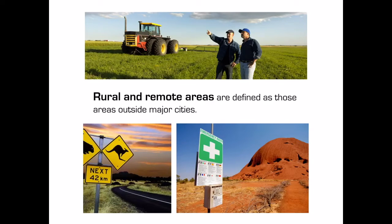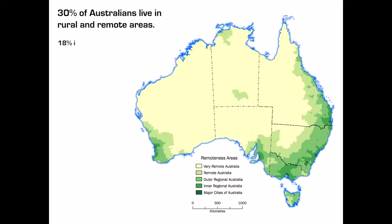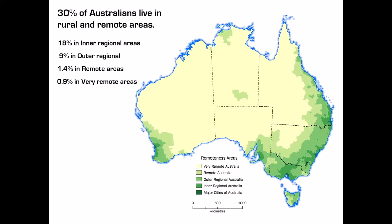Rural and remote areas are defined as those areas outside major cities. You can clearly see on this map that there is quite a large proportion of the population living in rural and remote areas. In fact, the majority of Australia would be considered very remote, with only small pockets considered major cities, and the rest dominated by remote, outer regional and inner regional.